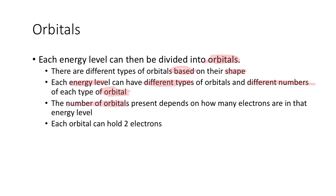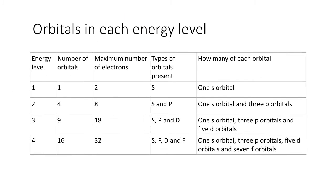Each energy level can have different types and different numbers of orbitals, depending on how many electrons that energy level can hold. The car park closest to the entrance might be small, but the regions further out are bigger because there's more space. Generally, as you go up energy levels, more electrons can fit. Each orbital can hold two electrons. This table summarizes most of that, so let's go through it.